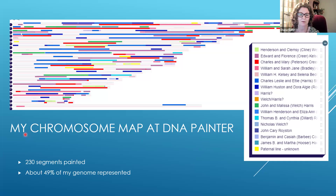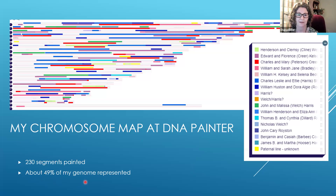Let's take a look at my chromosome map at DNA Painter. It's very colorful — I've identified quite a few different ancestral couples. Currently I have about 230 segments painted and about 49% of my genome represented, so about half of my segments I have not identified as coming from anyone. I'm hoping to raise that number gradually. As I discover a match and know who our common ancestral couple is, I assign that match the color of one of the couples.